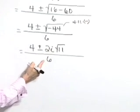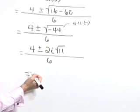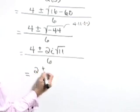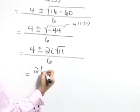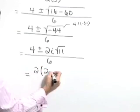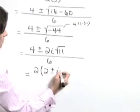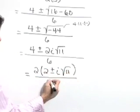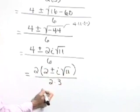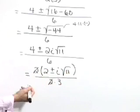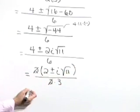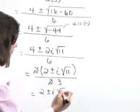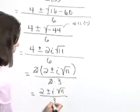Now each of our terms has a common factor of 2. We're going to cancel that 2 out. I'm going to factor the numerator as 2 times 2, that gives that 4, plus or minus i times the square root of 11, all over 6. And let's write that 6 as 2 times 3, so we can see our common factor of 2 that will cancel out. Lastly, 2 plus or minus i times the square root of 11, all over 3.